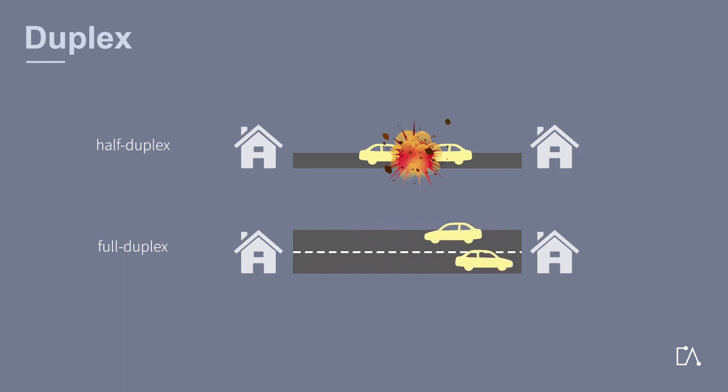We can imagine it like a country road. It is possible to drive in both directions and there is oncoming traffic, but there are no collisions. However, a little more bandwidth is needed than with half-duplex.